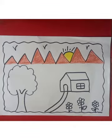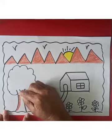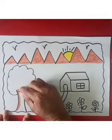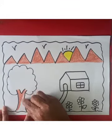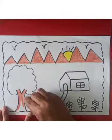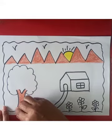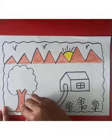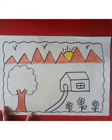Now we will do color in the tree. The tree trunk is brown color, so we will do brown color. What is the color of leaves? Leaves are green in color, so we will do green color in the leaves.